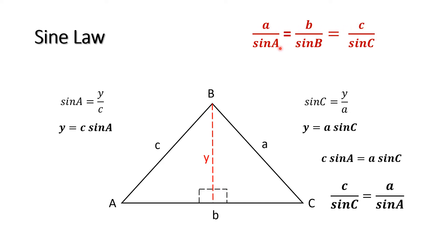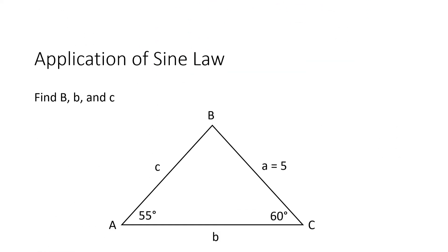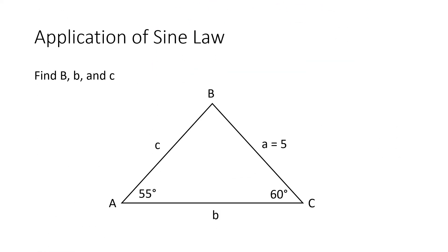This ratio also applies to finding side B and angle B. So the sine law formula is: A over sine A equals B over sine B equals C over sine C, where the lowercase letters are sides and the uppercase letters are angles.